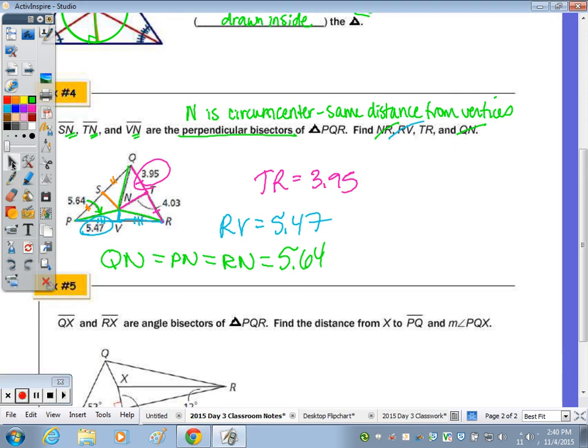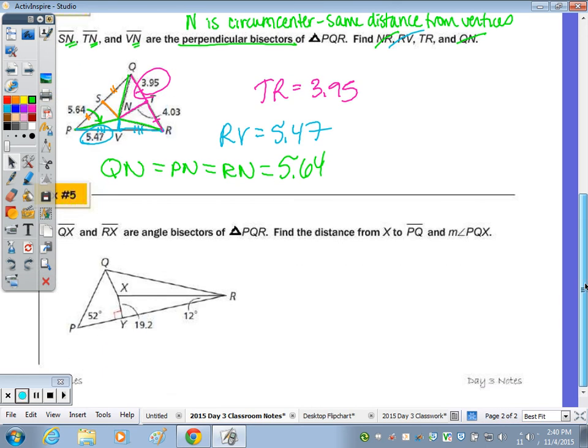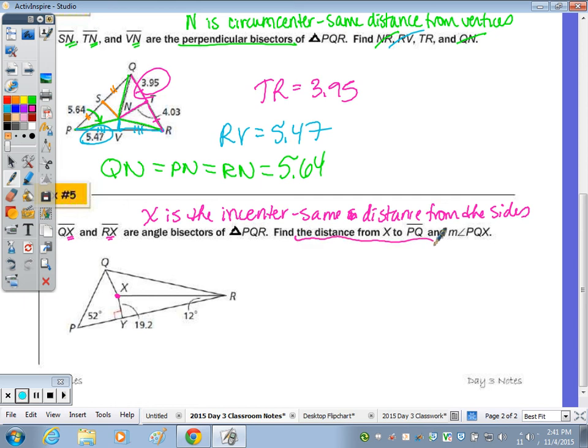In example number 5, the last question, it says that QX and RX are angle bisectors. So that means X, that point of concurrency for the angle bisectors, is called the incenter, which is the same distance from the sides. So if I'm finding the distance from X to PQ, now PQ is a side. So I'm looking for a segment in that picture that gives me that distance from the center to any side because it's all going to be the same.